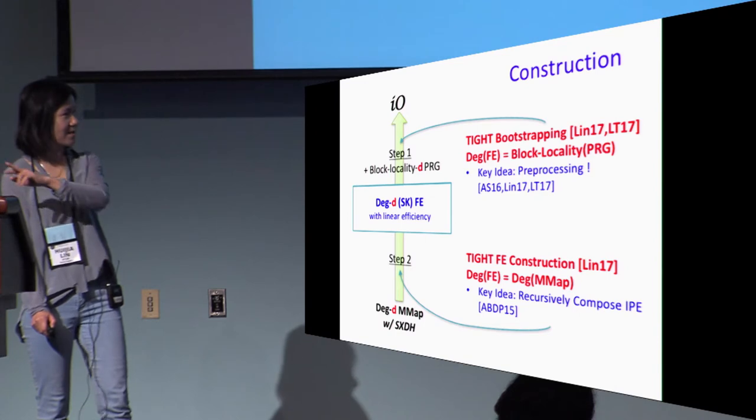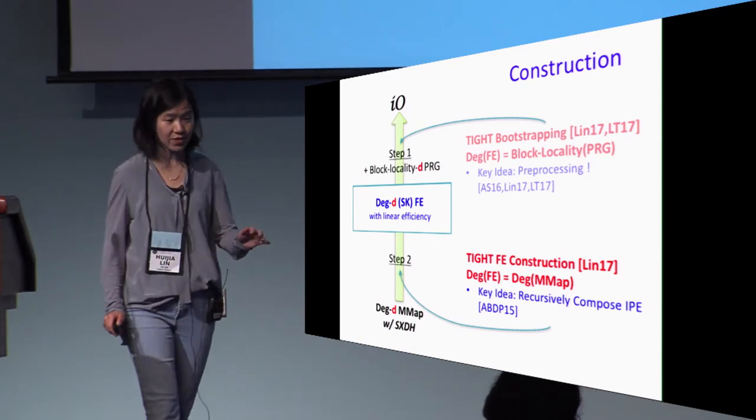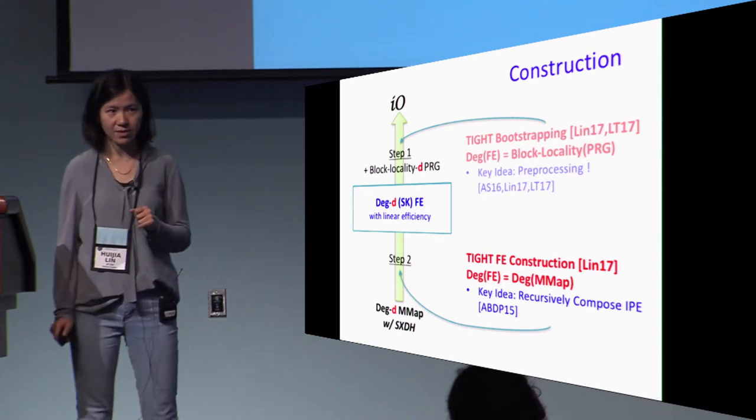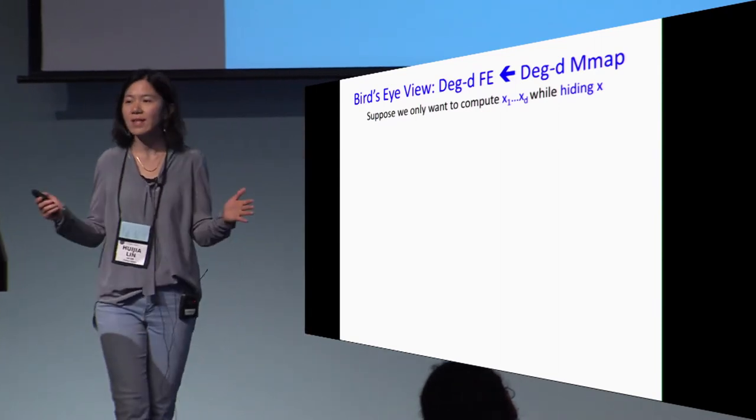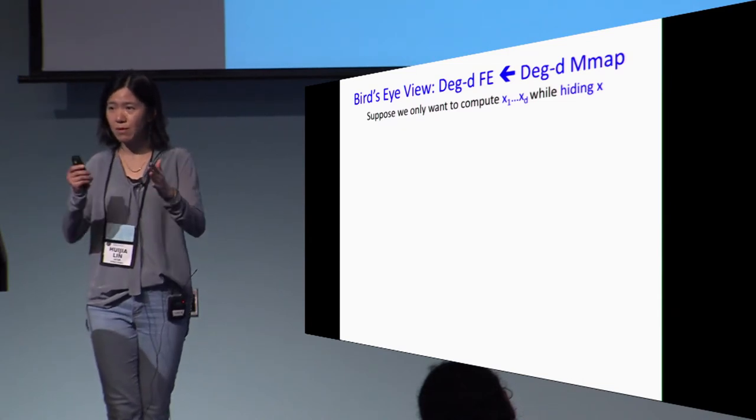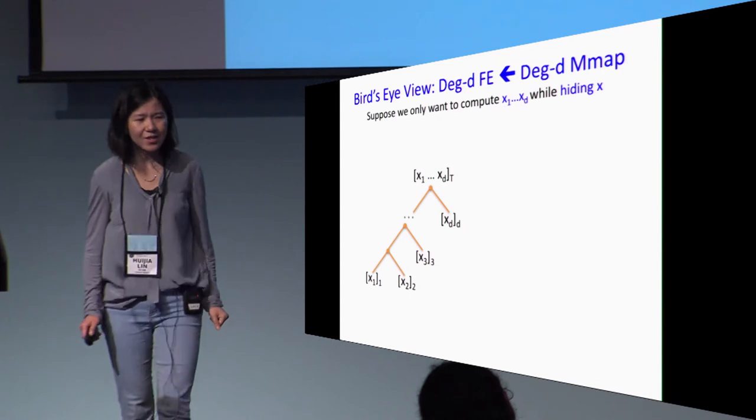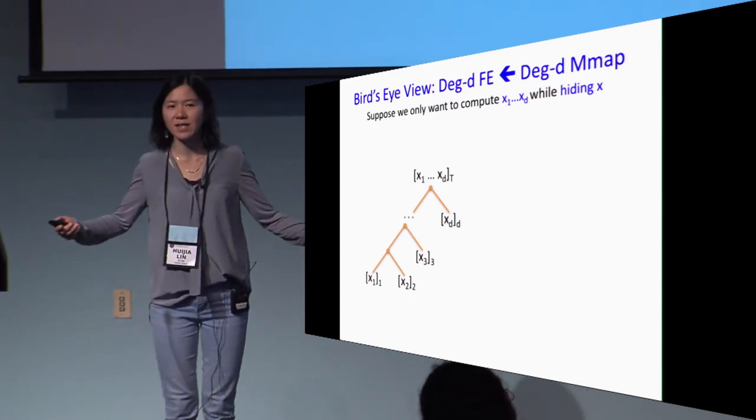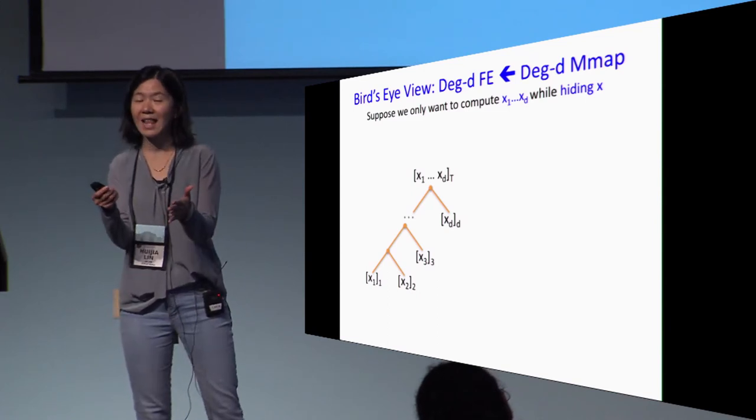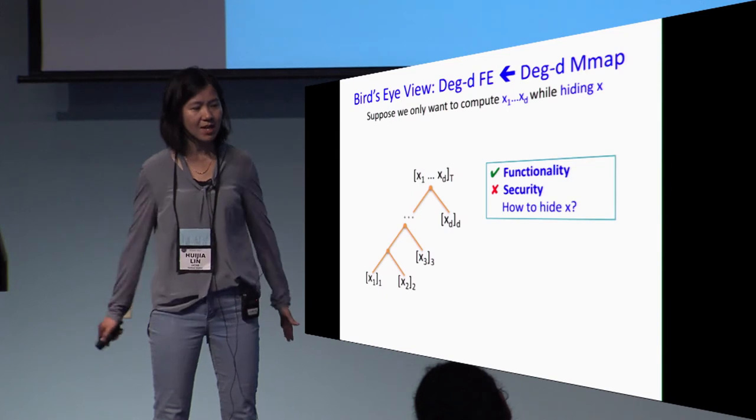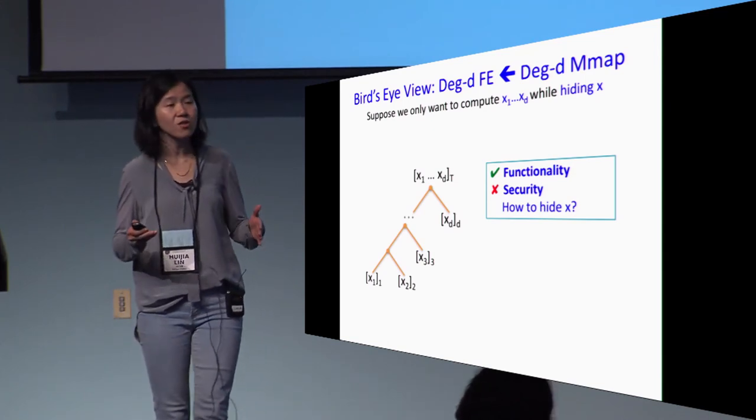With the remaining time, I'll try to give you a very high-level flavor of how to construct such degree D FE using exactly degree D multilinear map. Let's start with a thought process. The only thing I want to compute is a degree D monomial. I want to compute X1 multiply all the way to XD while hiding the input X. The natural first naive idea is that I have multilinear map. Let me just encode this input bits or input elements using inside the different groups. The pairing will allow us to compute the product in the target group. This somehow suffices for the functionality, but security completely falls apart. Why? Because those encodings really do not hide the input, which can be arbitrary fixed values.